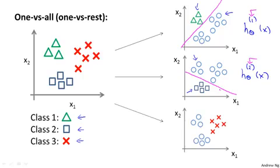And finally, we do the same thing for the third class and fit a third classifier, h superscript 3 of x, and maybe this will give us a decision boundary that separates the positive and negative examples like that.